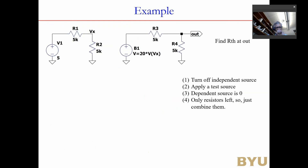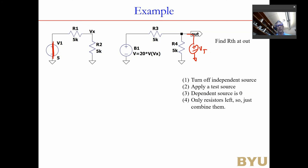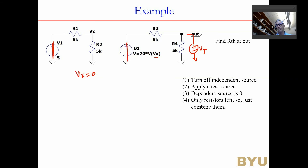Now let's look at a circuit with a dependent source. We apply our test source and short the independent source. Now I have to figure out VX — the controlling variable for the dependent source. VX is a voltage with no independent sources driving it, so VX = 0, which means the dependent source effectively becomes a short. Therefore R_Thevenin = 5k ∥ 5k. We had to go through the test source procedure to confirm VX = 0 before combining resistors.